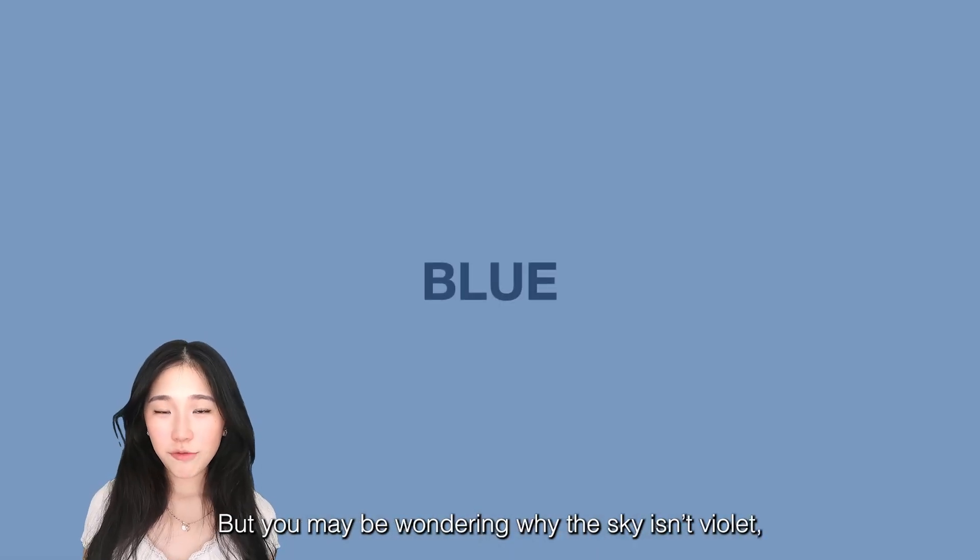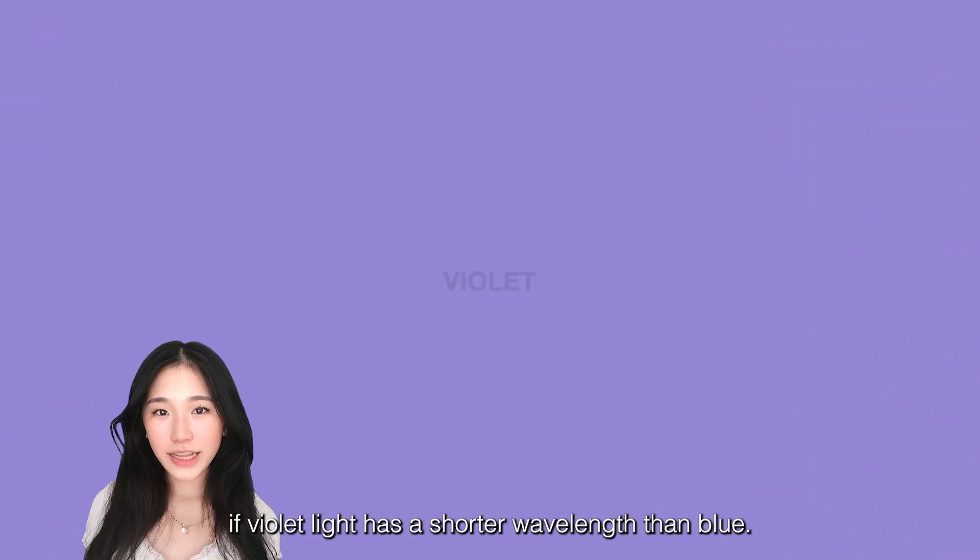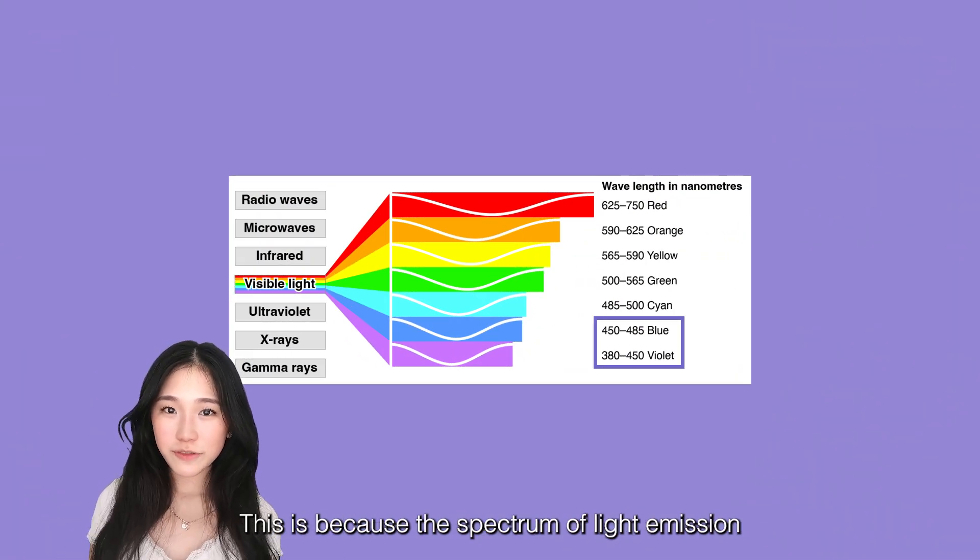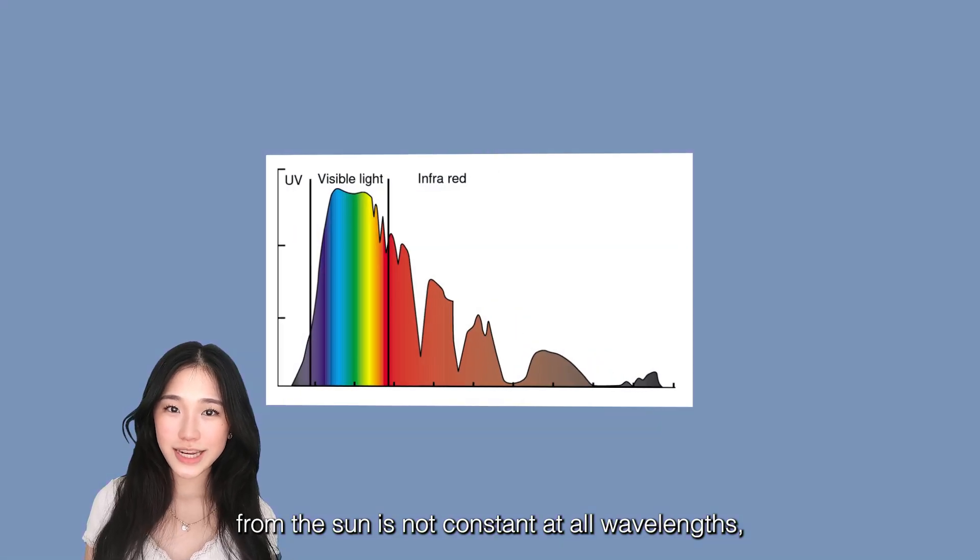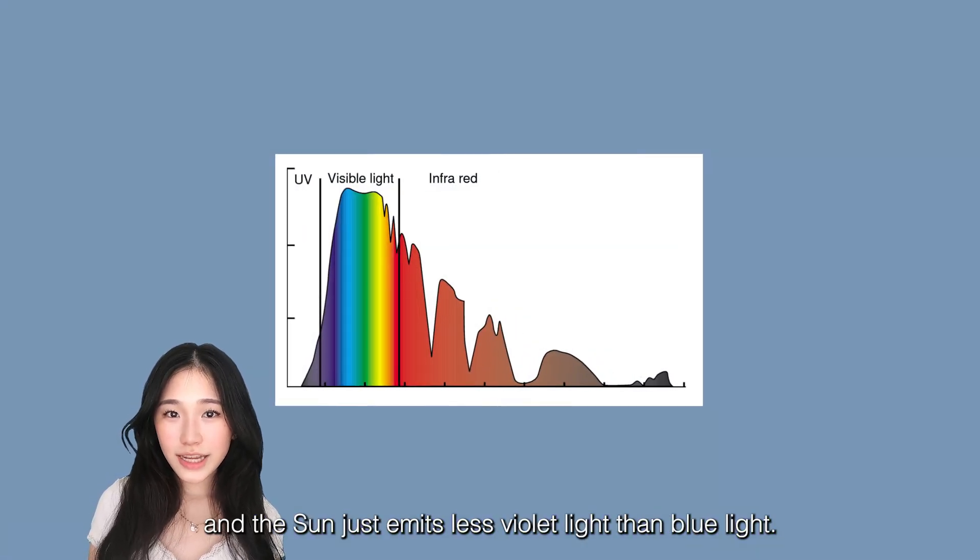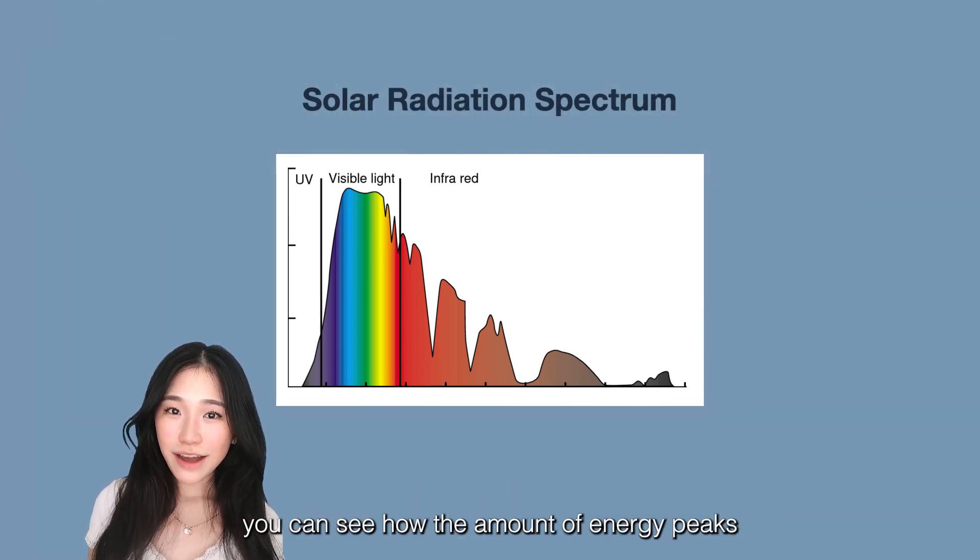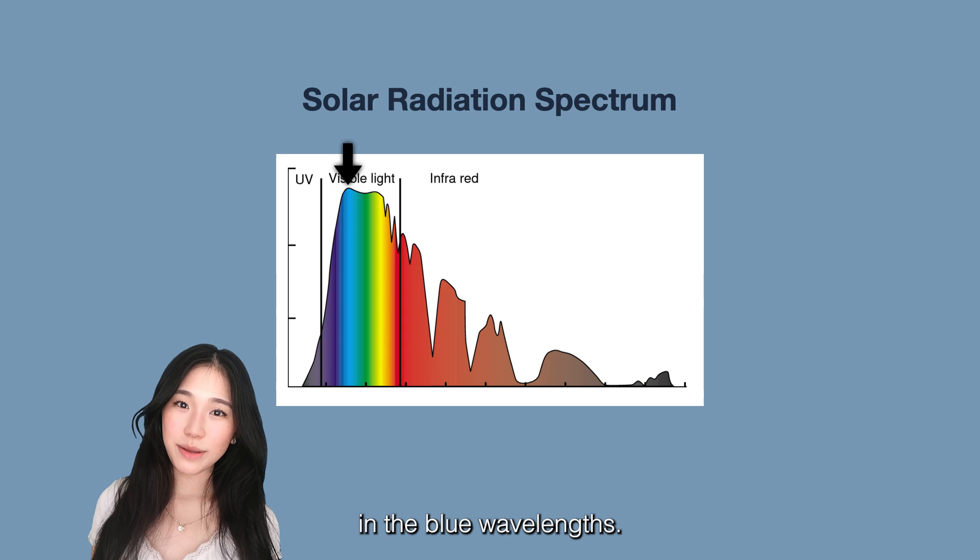But you may be wondering why the sky isn't violet if violet light has a shorter wavelength than blue. This is because the spectrum of light emission from the Sun is not constant at all wavelengths and the Sun just emits less violet light than blue light. In this solar radiation spectrum, you can see how the amount of energy peaks in the blue wavelengths.